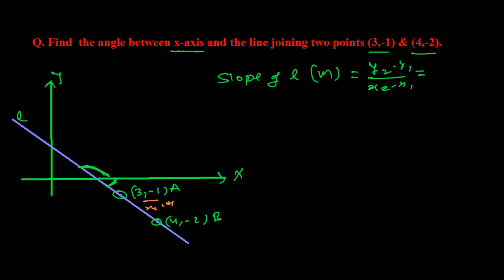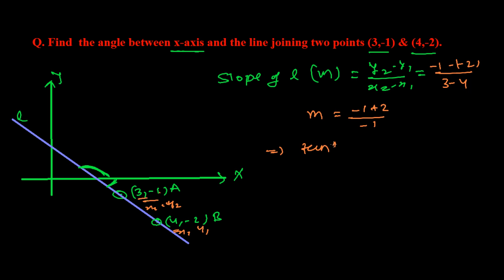Let's suppose the first point is (x2, y2) and the second is (x1, y1). So y2 minus y1 is minus one minus minus two, and x2 minus x1 is three minus four. So M equals minus one plus two over minus one, which gives one over minus one. Since slope M equals tan(theta), tan(theta) equals minus one.